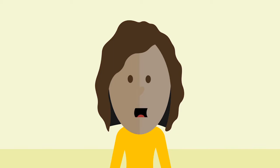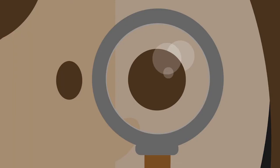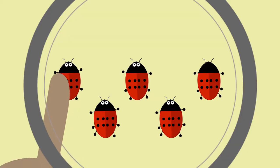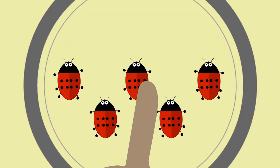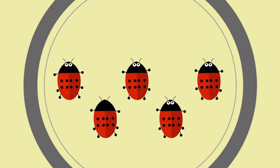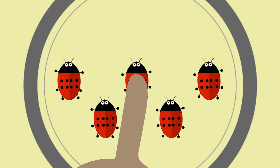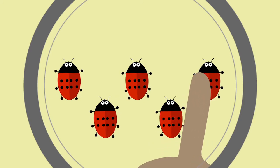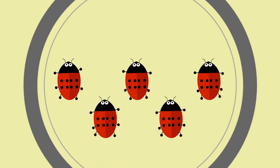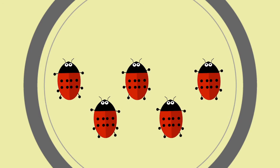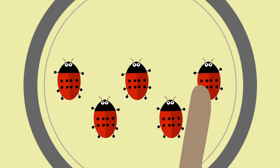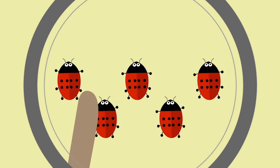We also need to understand that we can count a set of objects from any starting point and notice that the quantity does not change. 5 ladybirds: 1, 2, 3, 4, 5. Now if I start counting from the middle, I still count 5: 1, 2, 3, 4, 5. So when I count again, starting with a different ladybird, there are still 5 ladybirds.